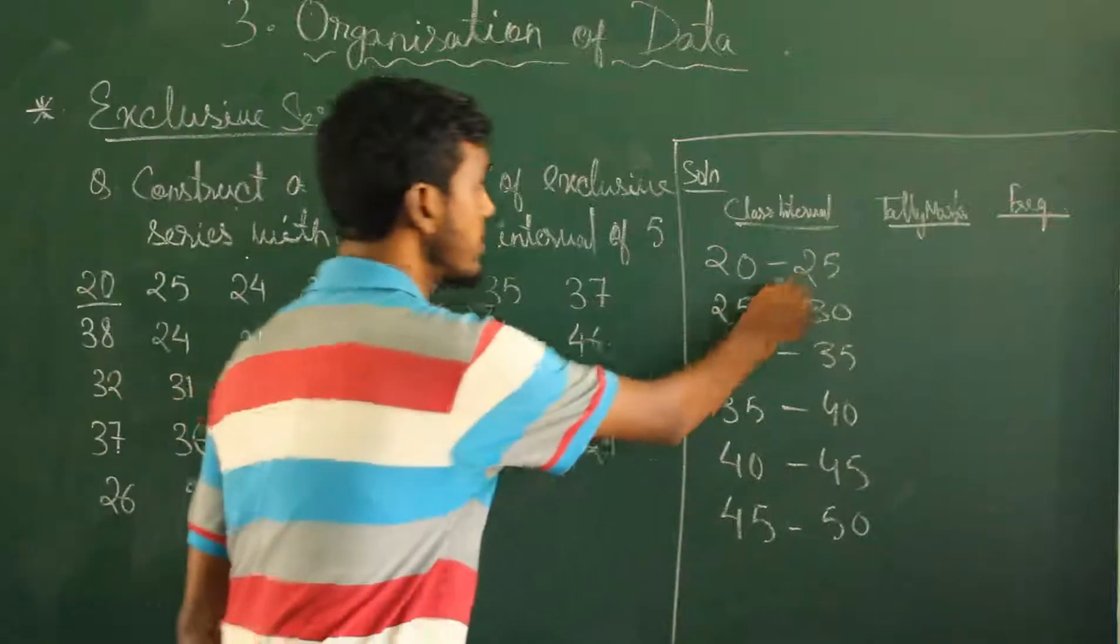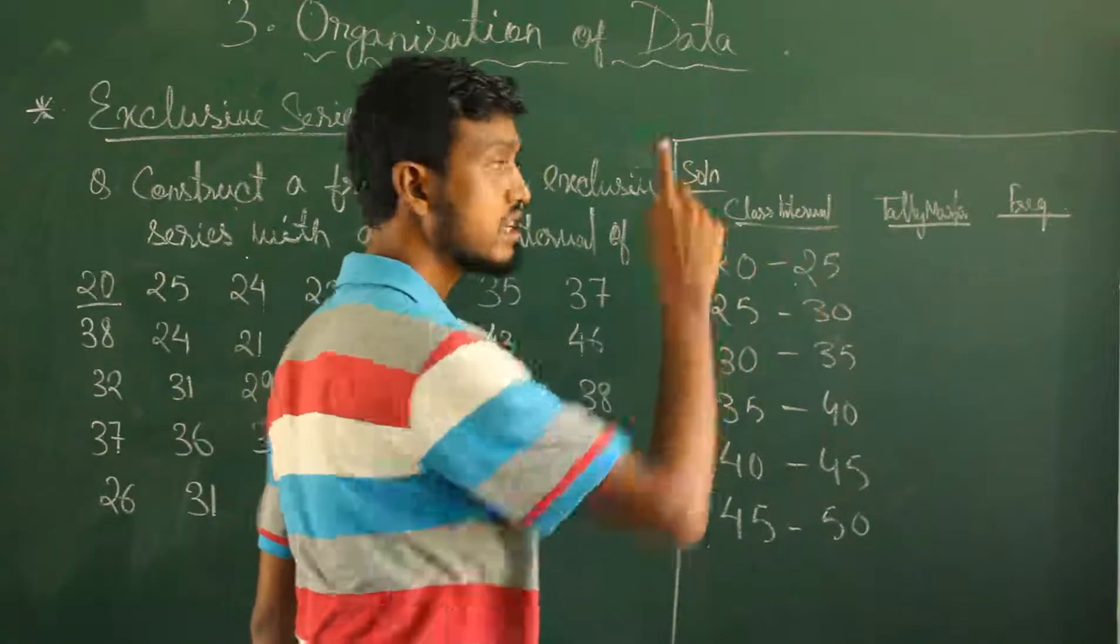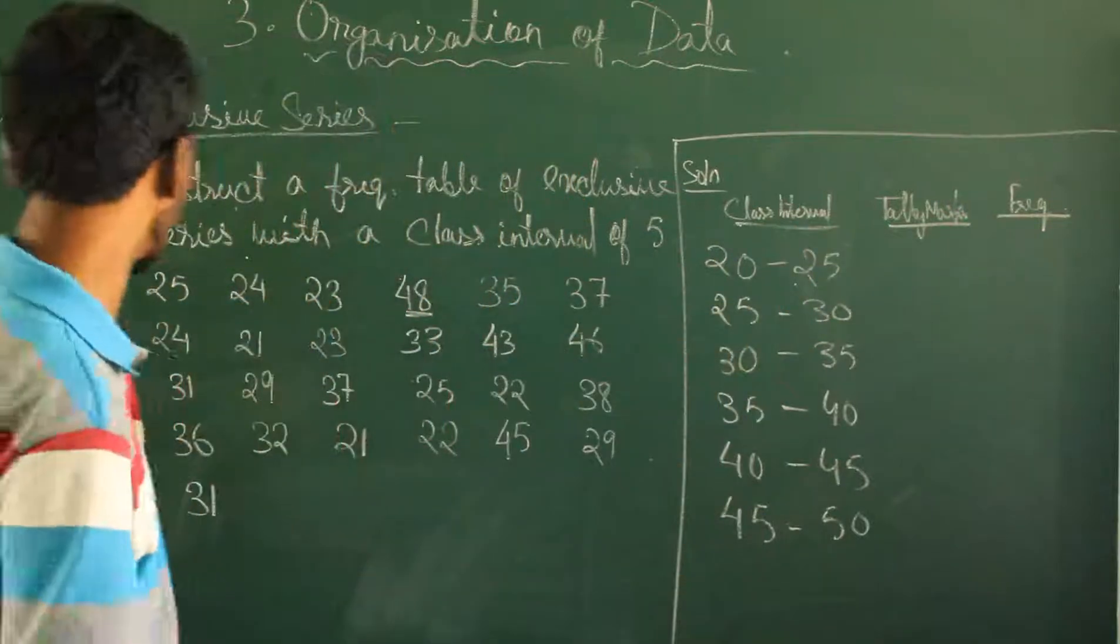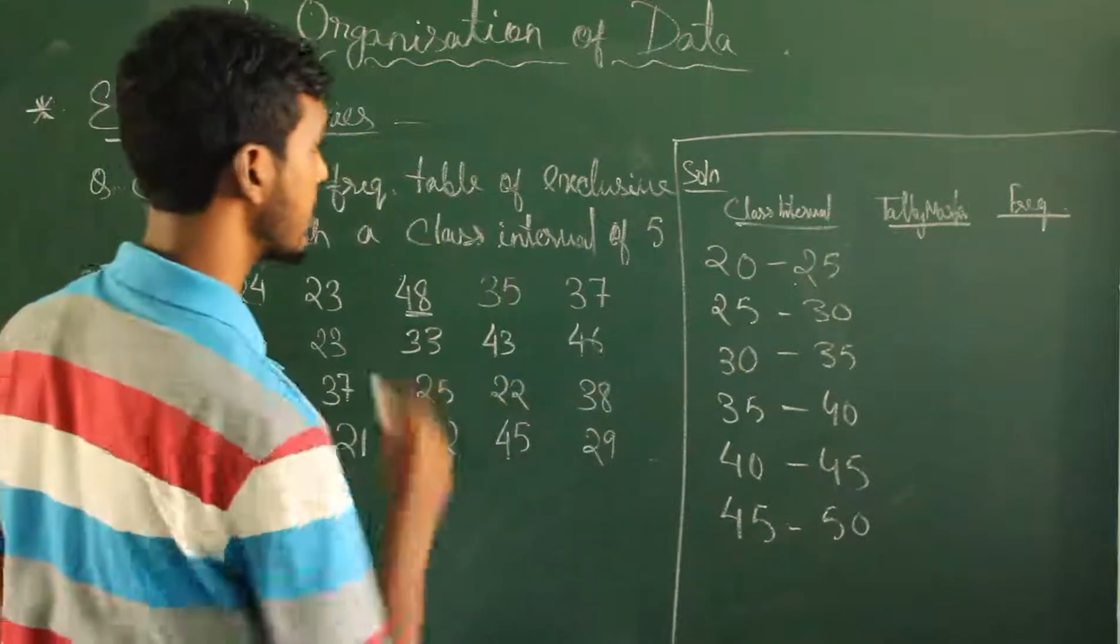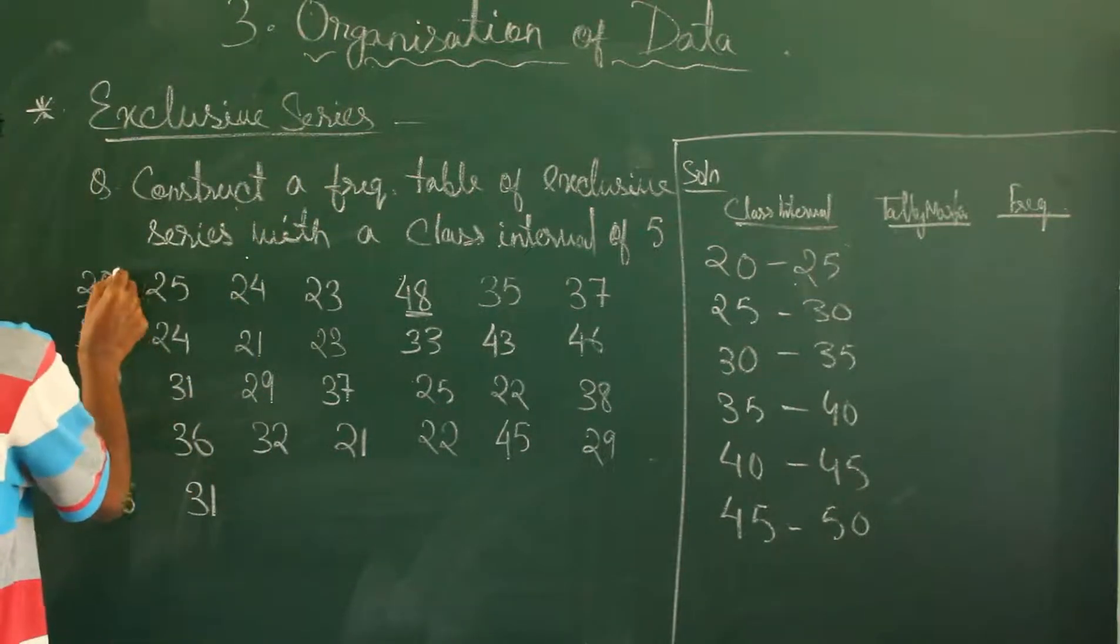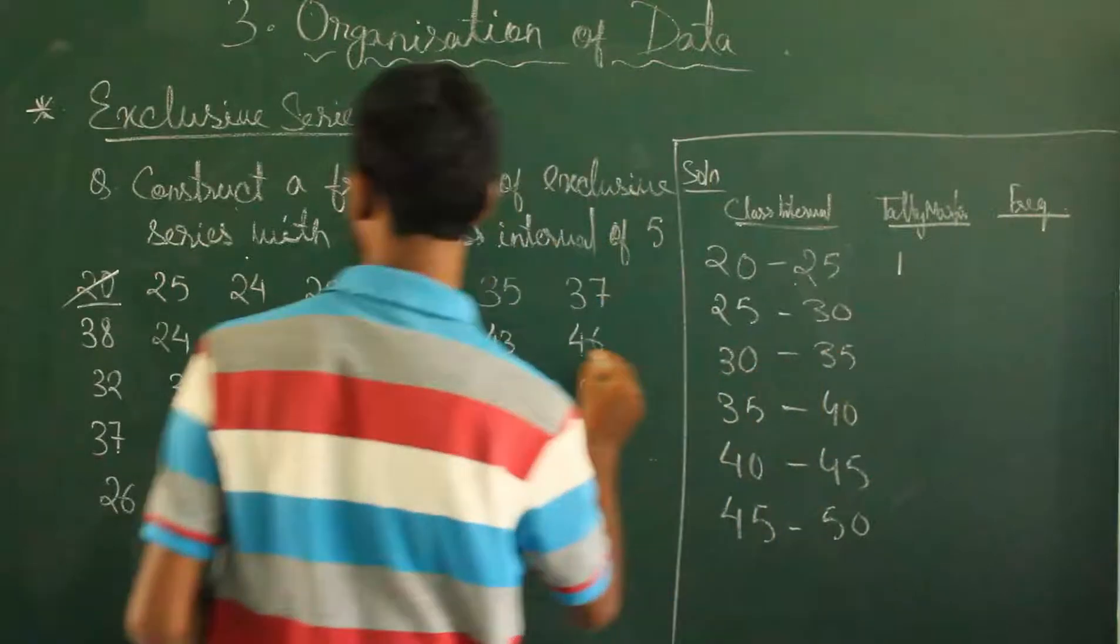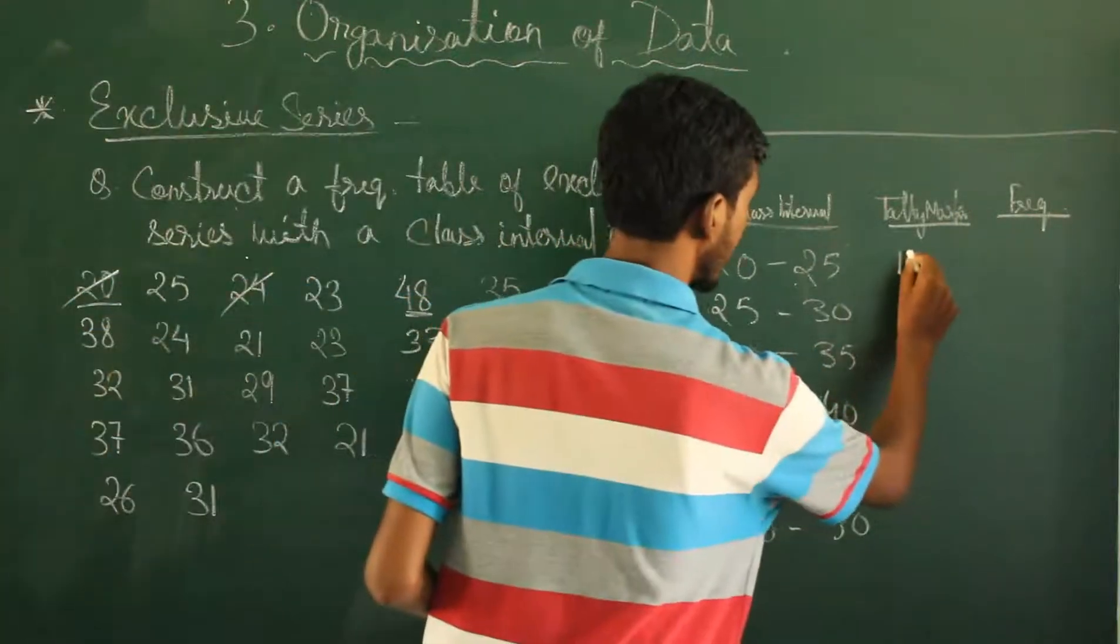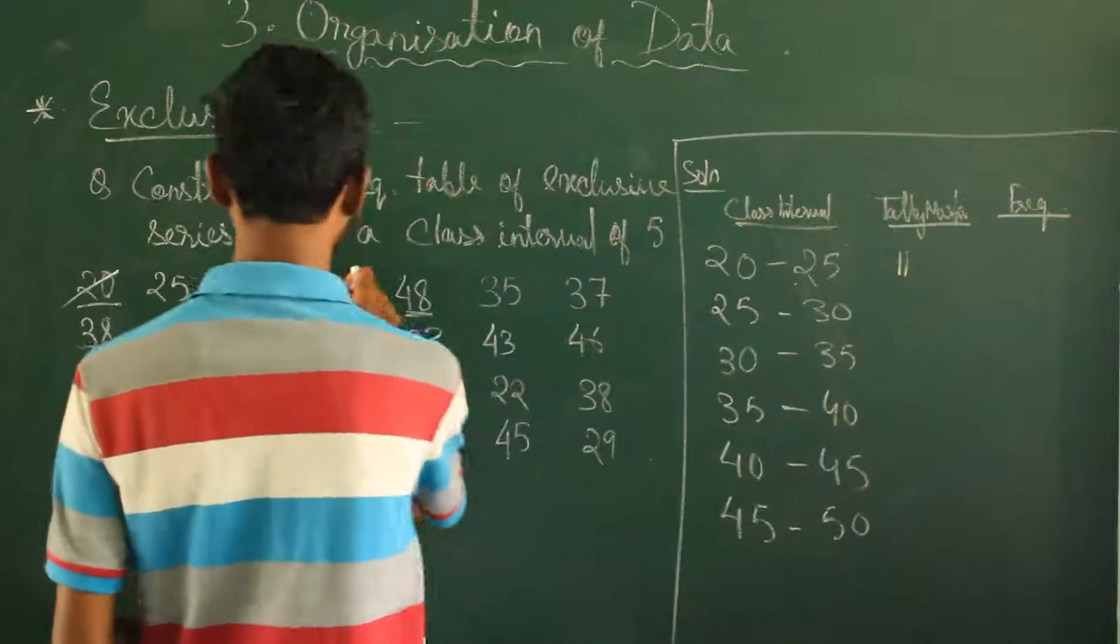So we are taking 20 to 25. What values fall in this range? First we are taking 20.